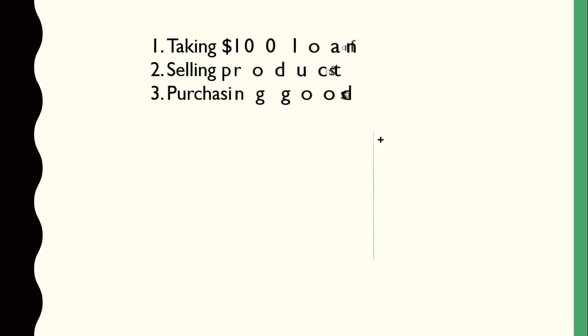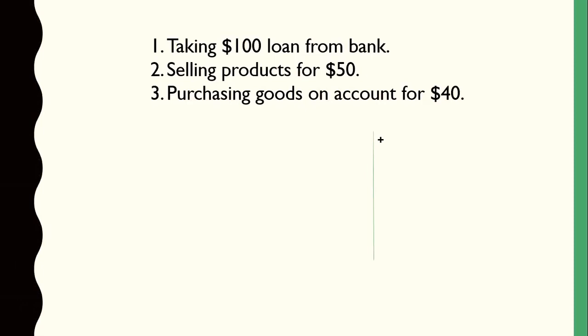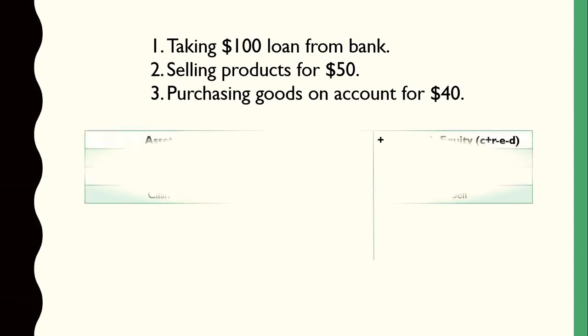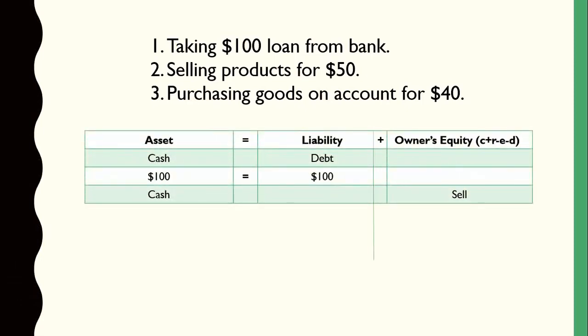Now let's look at three transactions and see how A equals L plus OE works. The first transaction is taking a $100 loan from a bank. If you take a $100 loan, you receive cash, so your cash will increase. On the asset side, you write plus $100. And since you have to pay back the loan with interest someday, it increases your liability. So on the liability side, you also increase by $100.